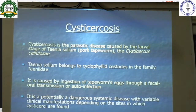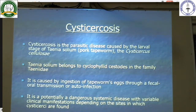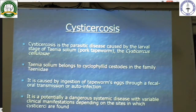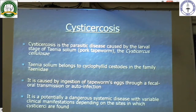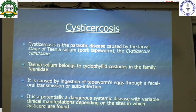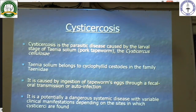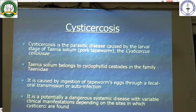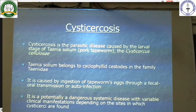Moving on to cysticercosis: it is a parasitic disease caused by larval forms of Taenia solium, the Cysticercus cellulosae. Taenia solium belongs to Cyclophyllidea cestodes in the family Taeniidae. It is caused by ingestion of tapeworm eggs through fecal-oral route transmission or autoinfection. It is a potentially dangerous systemic disease with variable clinical manifestations depending on the sites in which the cysticerci are found.